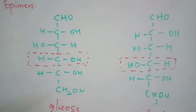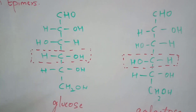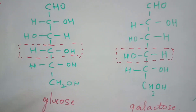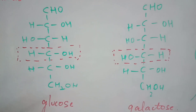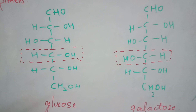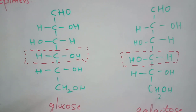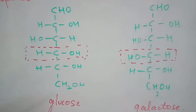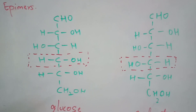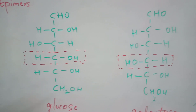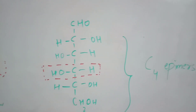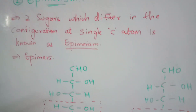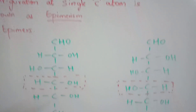At the fourth carbon of glucose, H is on the left and OH is on the right. In galactose, the fourth carbon has OH on the left and H on the right — opposite to glucose. Because this configuration change occurs at the fourth carbon, glucose and galactose are called C4 epimers.